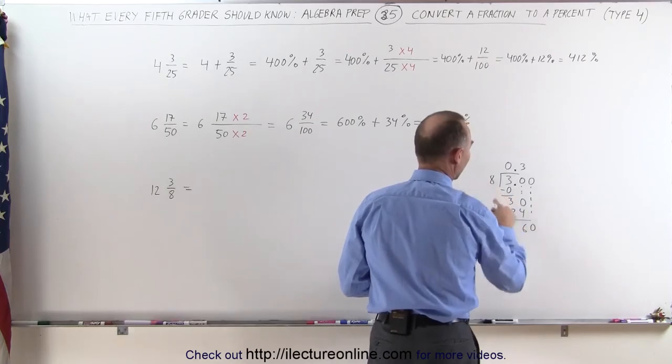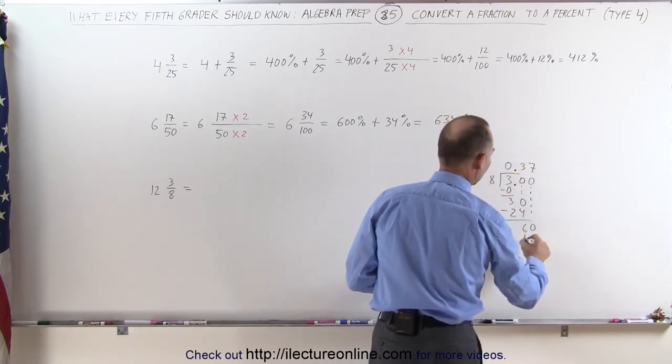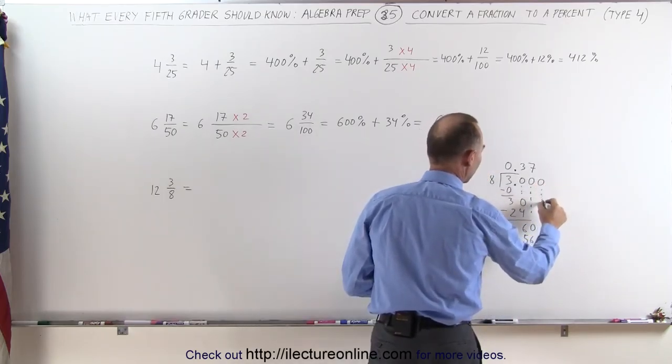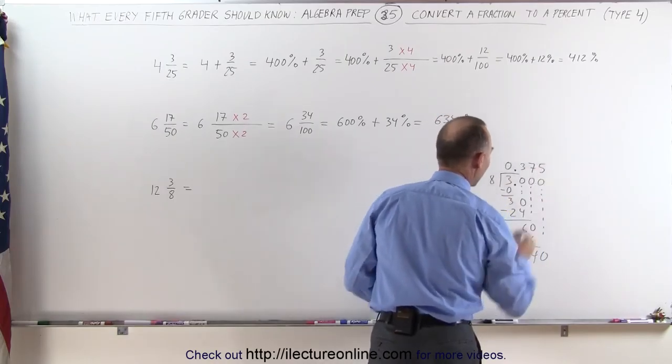Add another 0. 8 goes into 60, well that looks like 7 times. 7 times 8 is 56, remainder is 4. Add another 0, come down here, make that into a 40. 8 goes into 40, 5 times.